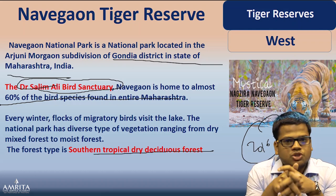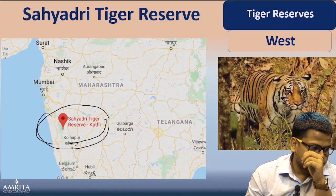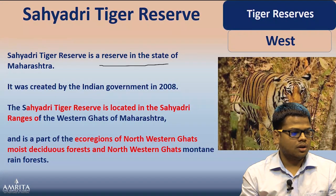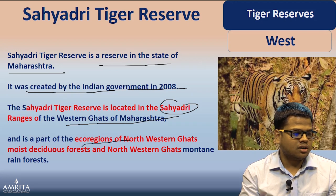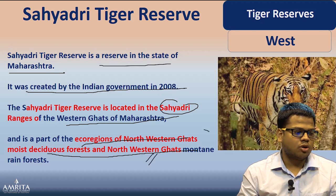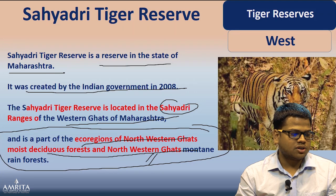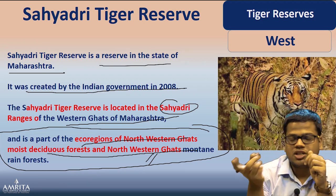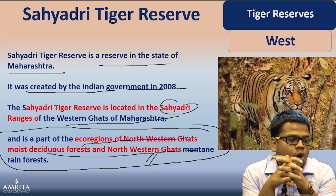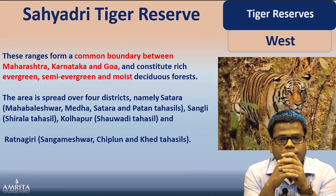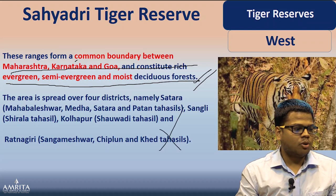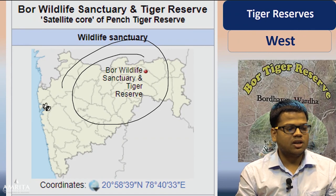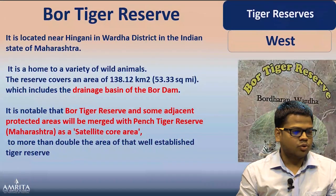Sahyadri Tiger Reserve — 'Sahyadri' is the Hindi name for the Western Ghats. It is a reserve in Maharashtra, created by the Indian government in 2008, located in the Sahyadri range of the Western Ghats of Maharashtra. It is part of the eco-region of the northwest Ghats moist deciduous forest and the northwest Ghats montane forest. It forms a common boundary between Maharashtra, Karnataka, and Goa, constituting rich green evergreen and moist deciduous forest.